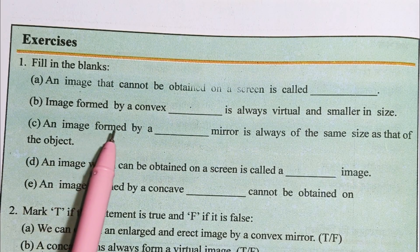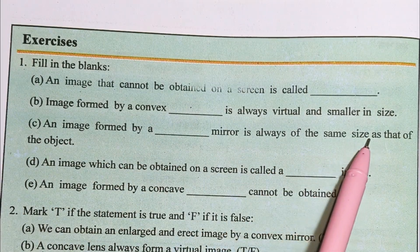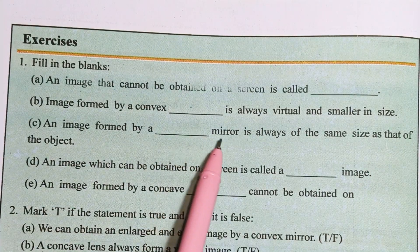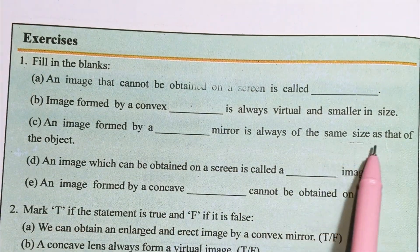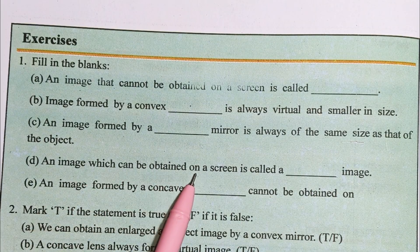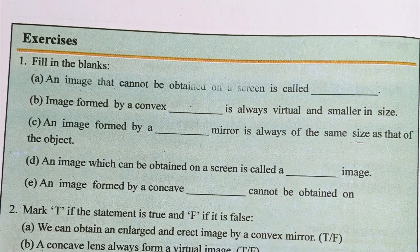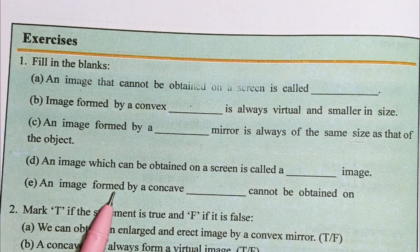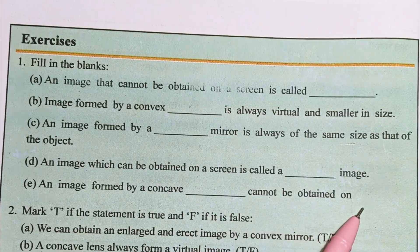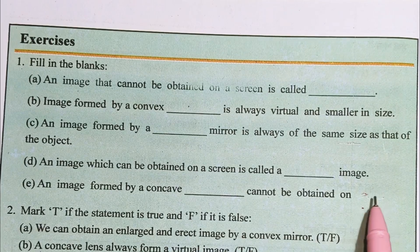Number C: An image formed by a plane mirror is always of the same size as that of the object — it is called a plain mirror. Number D: An image which can be obtained on a screen is called a real image. Number E: An image formed by a concave mirror cannot be obtained on a screen.